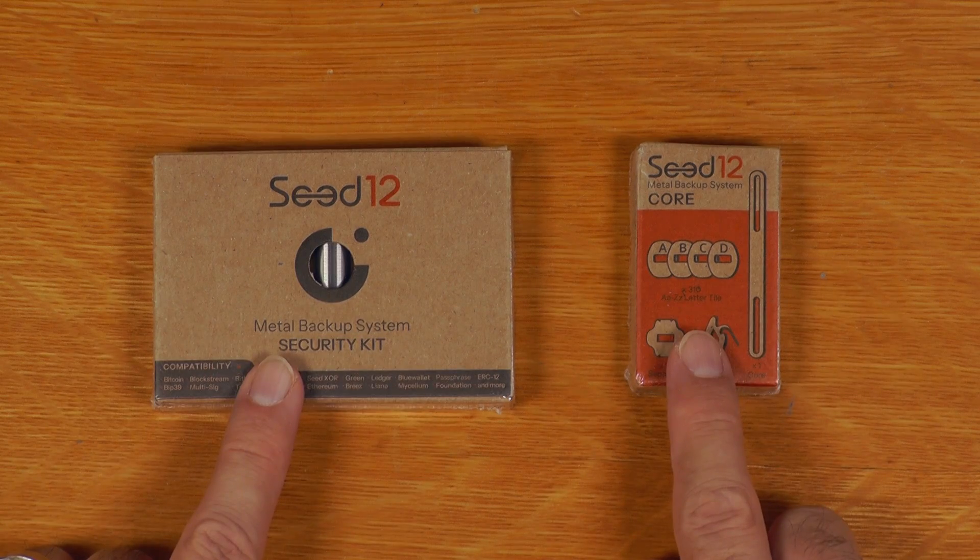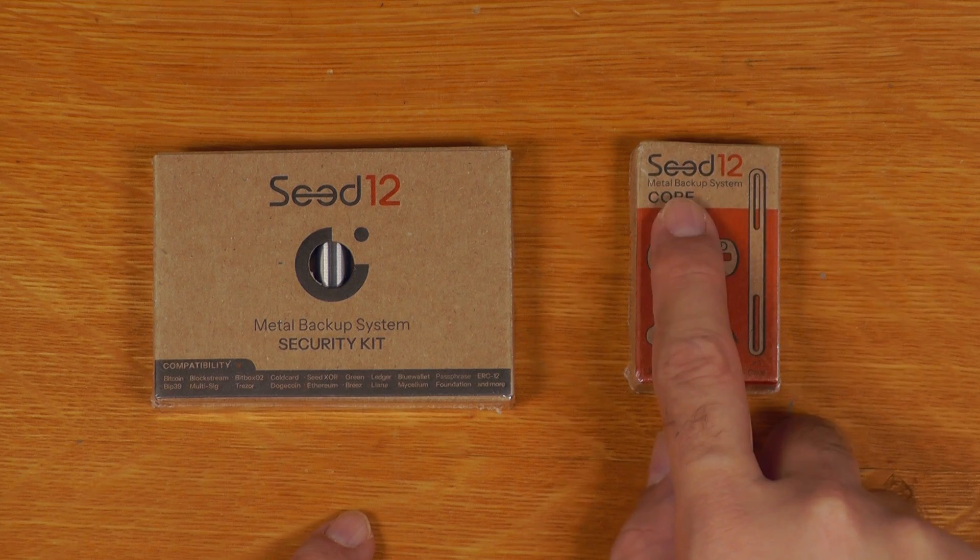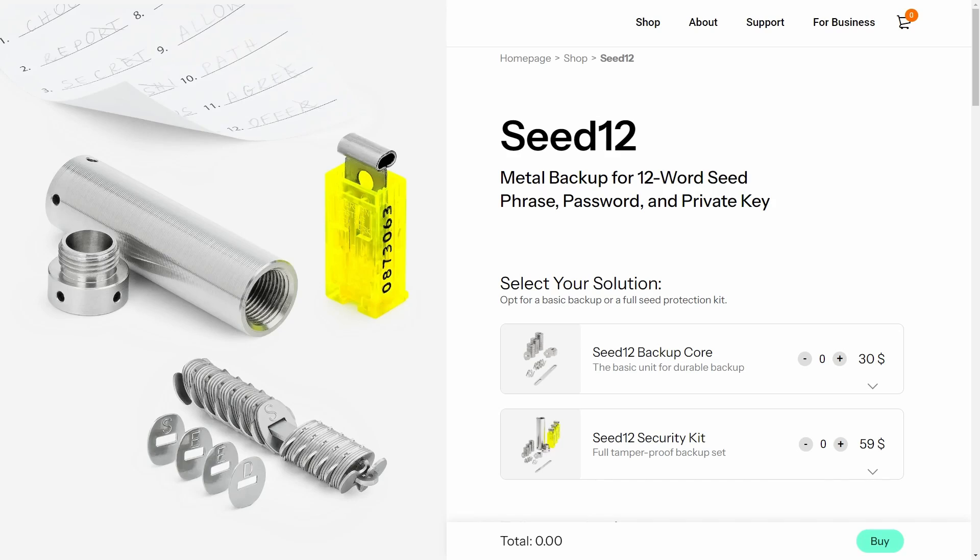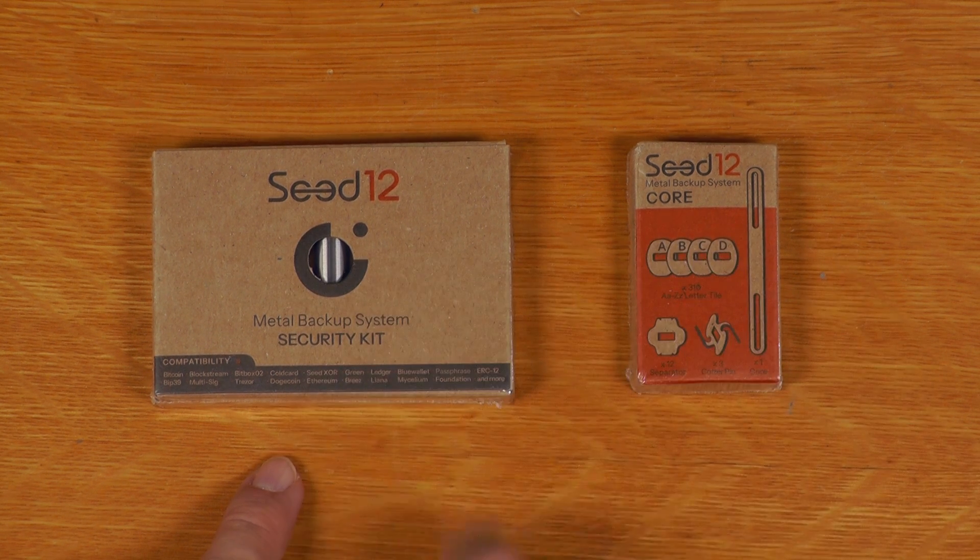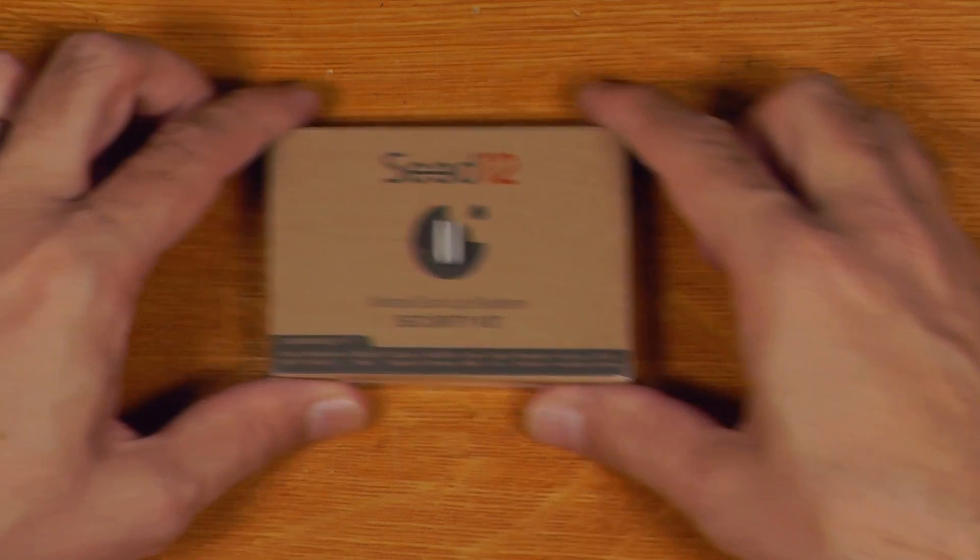All right, so this is everything that was sent to me. You can see we have the backup core and the security kit, and you can see them on the CryptoSteel website here. I'll just start with opening this one up because I'm pretty sure it's just going to include one of these in there as well.